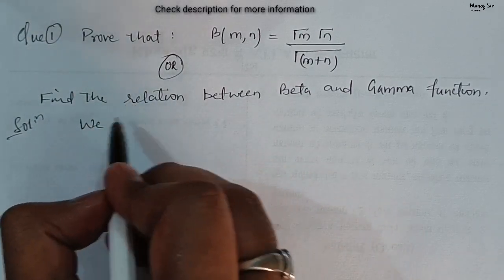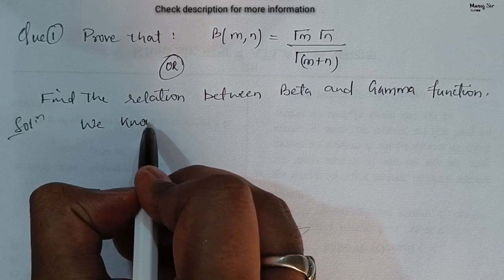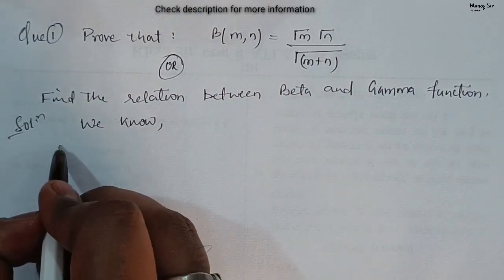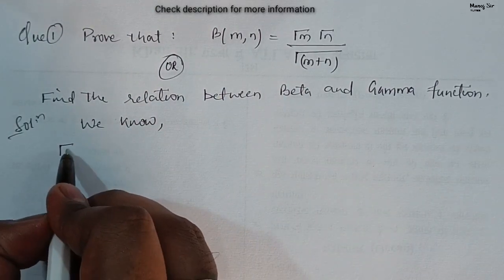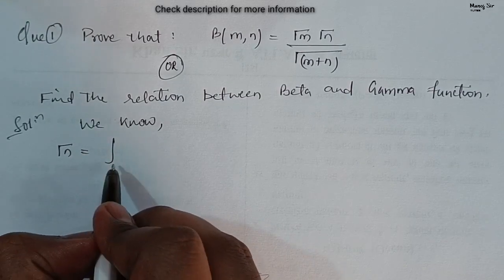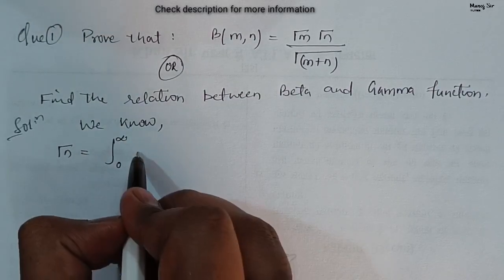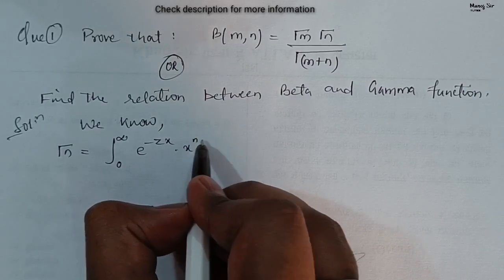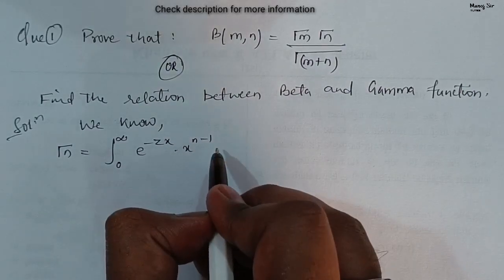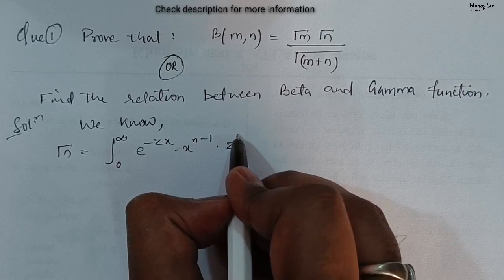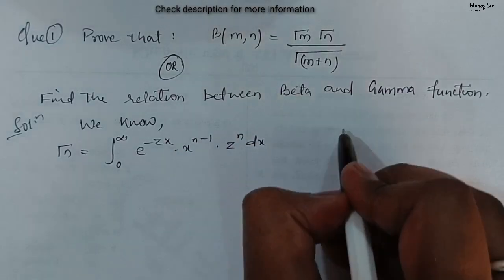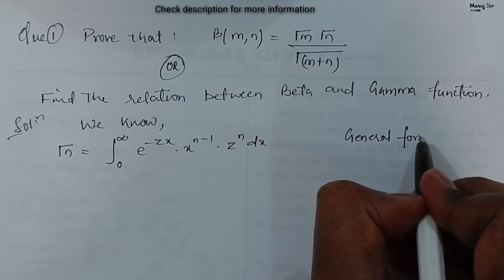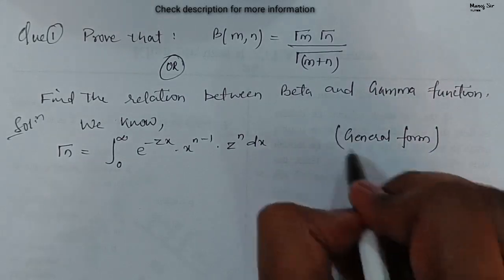We know that the general form of gamma function is: gamma of n equals to integration from 0 to infinity of e to the power minus zx into x to the power n minus 1 into z power n dx. This is the general form of gamma function.